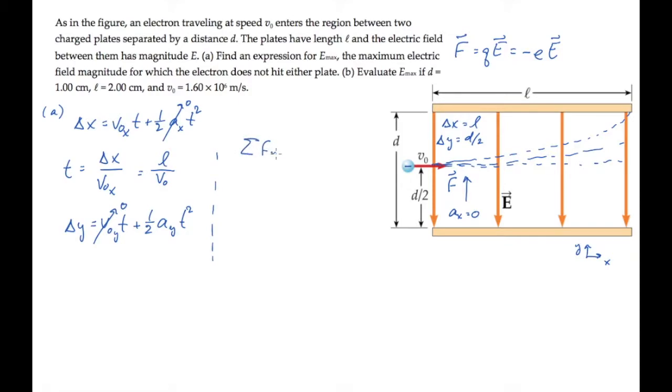We'll do that using Newton's second law. Summing the forces on the electron gives us its mass times its acceleration. The force is the electric force. It's along positive y with a magnitude of charge times electric field, and that equals electron mass times ay.